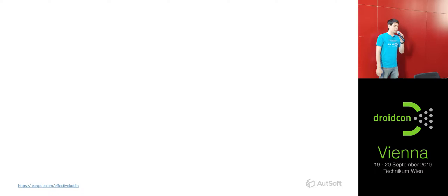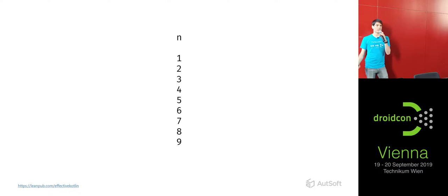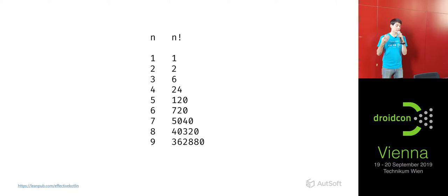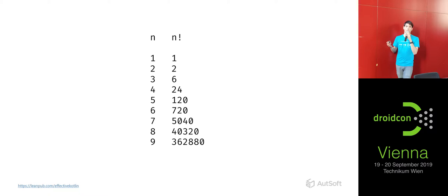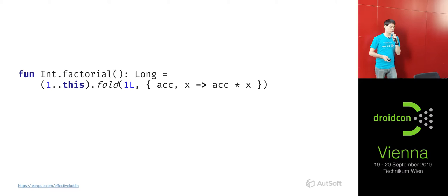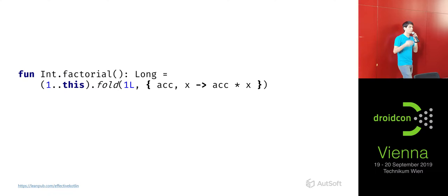For our next example we're going to talk about factorials. Just to recap: for any positive number n, the factorial is denoted n! and it's the product of numbers from 1 up to n. So for 3 it would be 1×2×3 which is 6. In Kotlin you can implement this imperatively, recursively, or in a functional way — one of my favorites — by taking a range from 1 to n and folding over it, starting with 1 and multiplying as you go, giving you exactly the factorial.